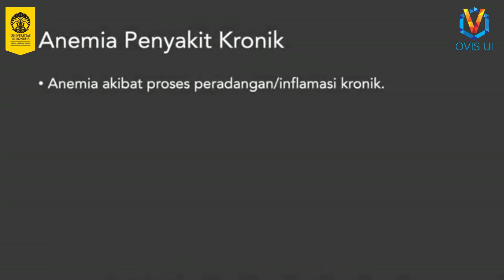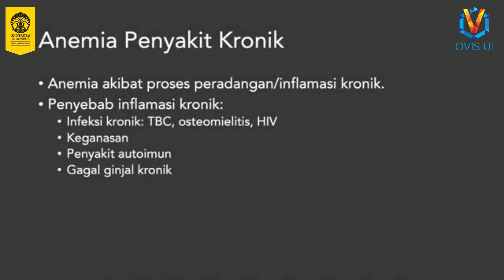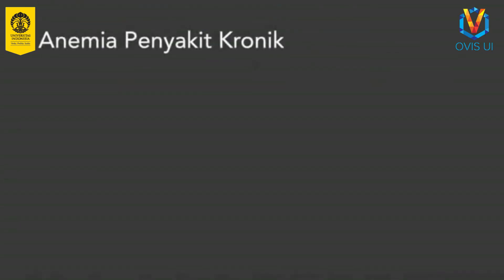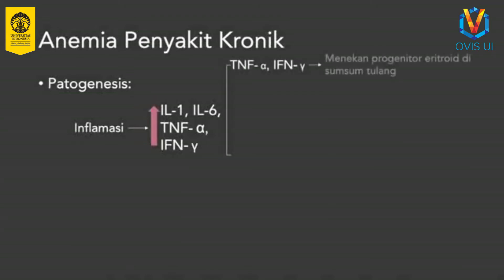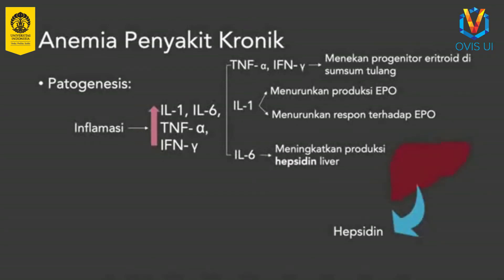Anemia penyakit kronik adalah anemia akibat proses peradangan atau inflamasi kronik. Inflamasi kronik antara lain dapat disebabkan infeksi kronik seperti tuberkulosis dan osteomyelitis, serta penyakit keganasan dan penyakit autoimun. Selain gejala anemia dapat ditemui juga gejala dari penyakit penyebab. Pada proses inflamasi, terjadi pelepasan berbagai mediator inflamasi seperti interleukin-1, interleukin-6, TNF-alpha, dan interferon gamma. TNF-alpha dan interferon gamma menekan progenitor eritroid di sumsum tulang. Interleukin-1 menurunkan produksi eritropoitin dan respons sumsum tulang terhadap stimulasi eritropoitin. Interleukin-6 meningkatkan produksi hepsidin dari liver yang menekan absorpsi besi dan pelepasan besi dari tempat penyimpanannya.